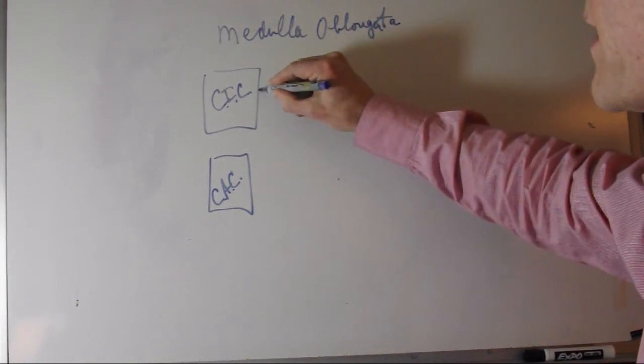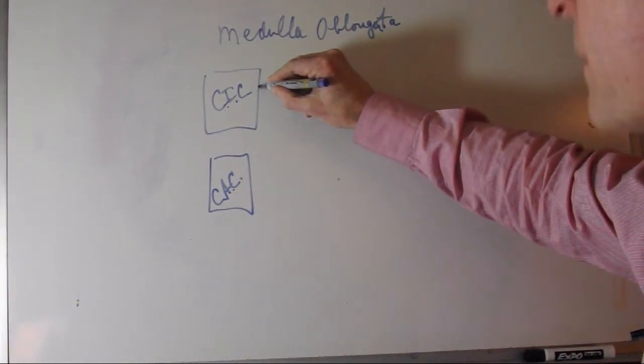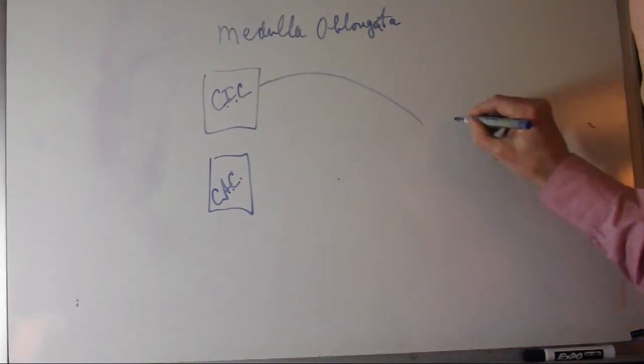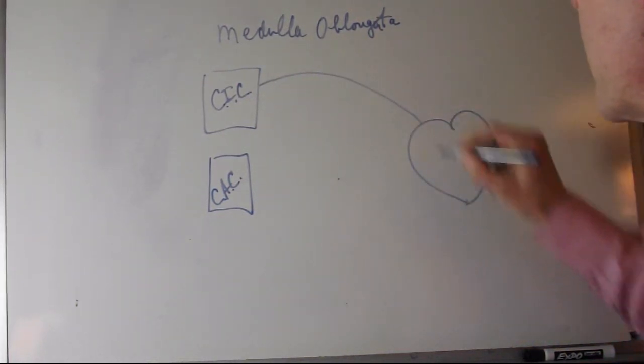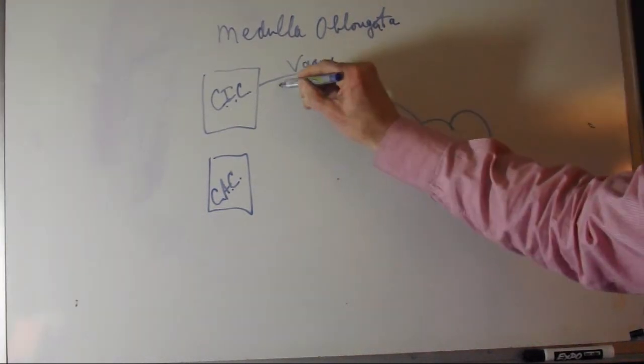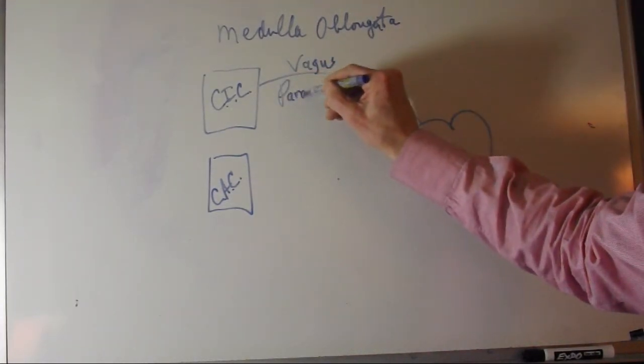From the cardiac inhibitory center arise the parasympathetic nerve fibers, which is the vagus nerve.